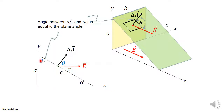Let's prove that those two angles are equal. We know this whole angle is 90 degrees, so theta plus alpha equals 90 degrees. Looking at the triangle, this alpha is exactly the same as the other alpha. In the triangle, one angle is 90 degrees, so this unknown angle plus alpha also equals 90 degrees.